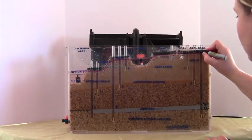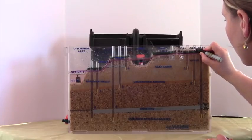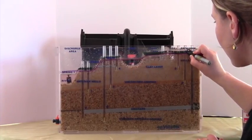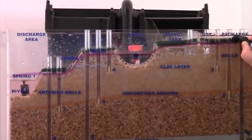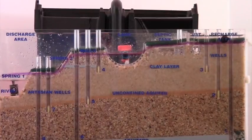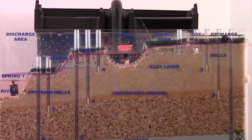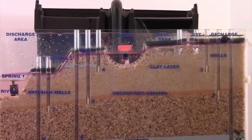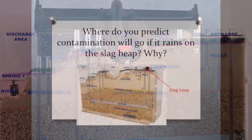So if the slag heap was rained on, arsenic and selenium from the slag would leach into the groundwater system. How do we think that contamination will move through this system and why? Take a minute to think about how and why contamination will move through this groundwater system.